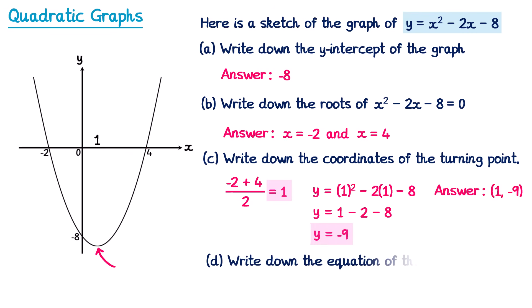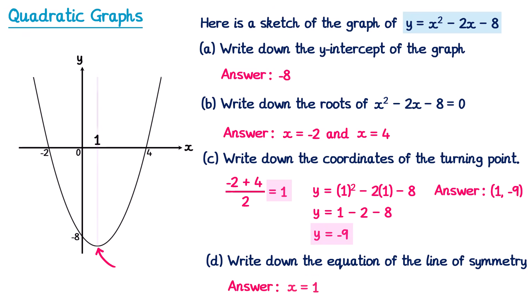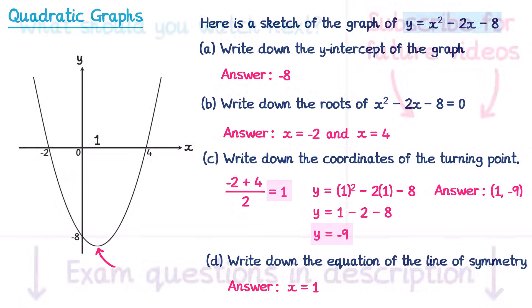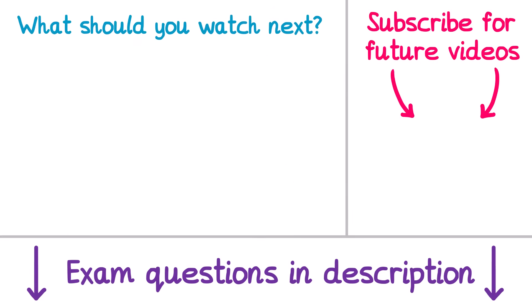For the final part, write down the equation of the line of symmetry. Now that we know the coordinates of the turning point, this isn't too bad. The line of symmetry goes through the turning point and we know the x-coordinate is 1, so it goes through 1 on the x-axis. The equation of the line of symmetry is x equals 1. Thank you for watching this video. Check out the one I think you should watch next, subscribe so you don't miss out on future videos, and try the exam questions in this video's description.